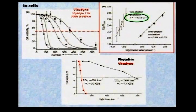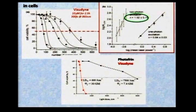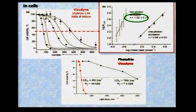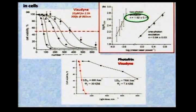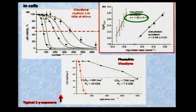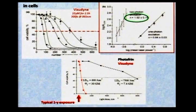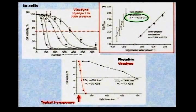However, when you plot cell survival curves against light dose in J/cm², visudyne is much more effective than photofrin as a two-photon PDT agent — its cross-section is 30 GM units versus seven — about four times as absorbing at these wavelengths. But a typical one-photon PDT light dose is one or two orders of magnitude lower. So although you can kill cells this way, it's extremely inefficient. You need a lot of energy.